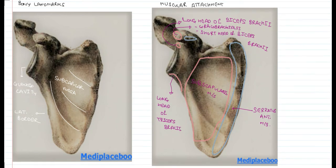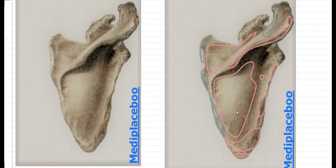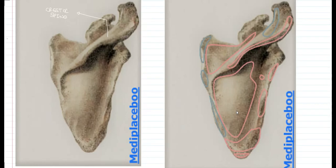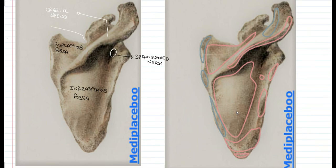At the root of the coracoid process we have the insertion for the pectoralis minor muscle. Moving to the dorsal aspect of the scapula, it is divided into two regions by the crest of the spine: the superior region, the supraspinous fossa, and the inferior region, the infraspinous fossa. The notch connecting both the supraspinous and infraspinous fossa is the spinoglenoid notch.